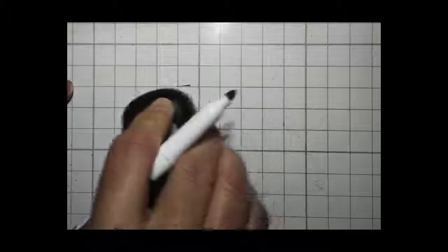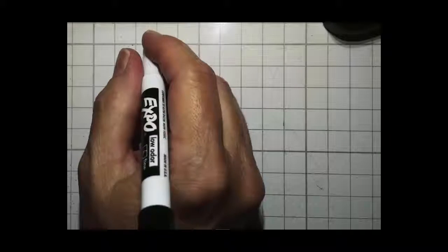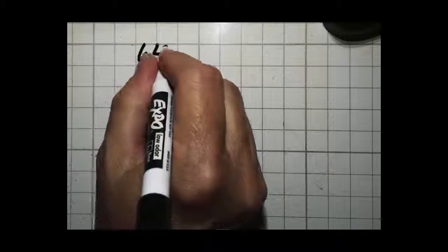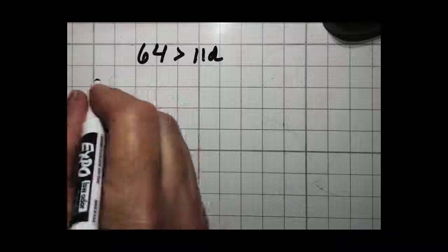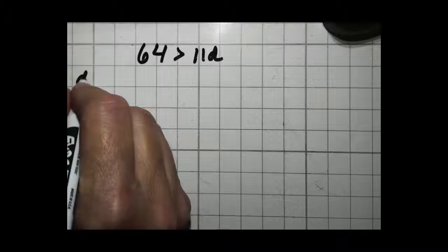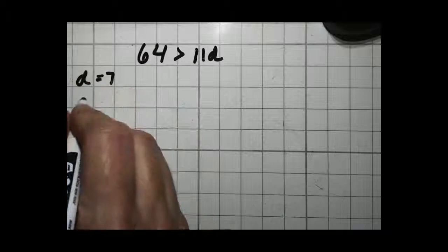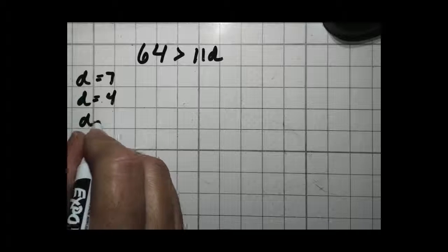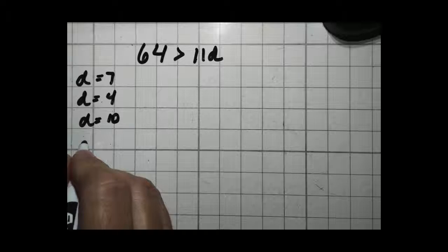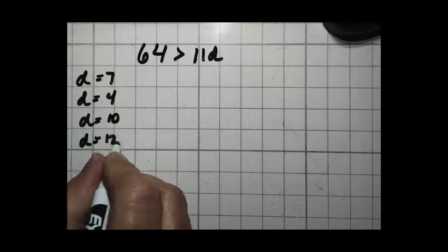Sometimes, however, it gets a little more complicated, because they give you an inequality. 64 is greater than 11d. And then they ask you, when d is equal to 7, is that true? When d is equal to 4, is that true? When d is equal to 10, is that true? When d is equal to 12, is that true?